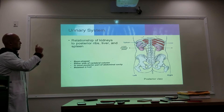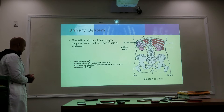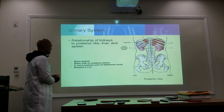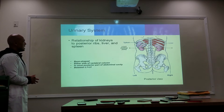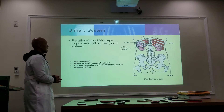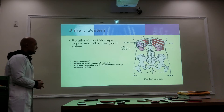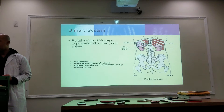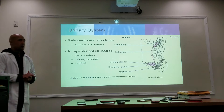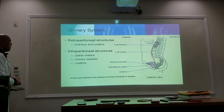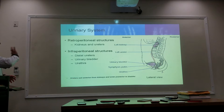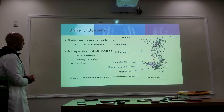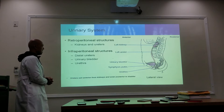The kidney is located on either side of the lumbar spine. It is the most posterior part of the abdominal cavity, and the middle of the kidneys are located between L1 and L2. The kidneys and ureters are part of the retroperitoneal structures. Below the peritoneum you will find your distal ureters, urinary bladder, and urethra.